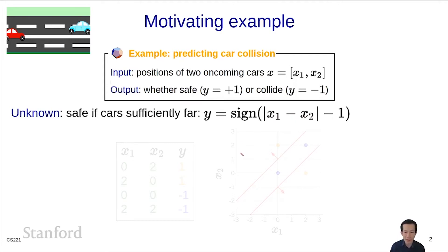We can visualize the true predictor as follows. Here's x₁ and x₂. We draw these two lines, and any point over here or over here is labeled as plus, which is safe. Anything in between is labeled as minus one, meaning they will collide.